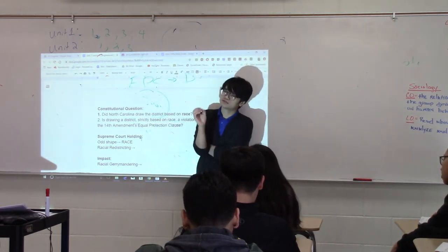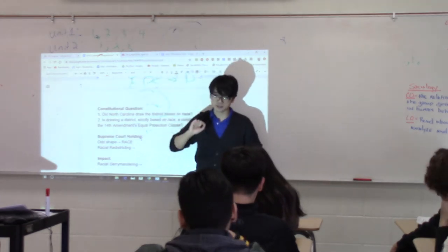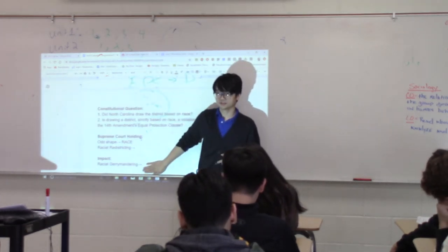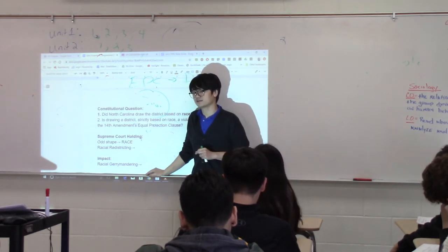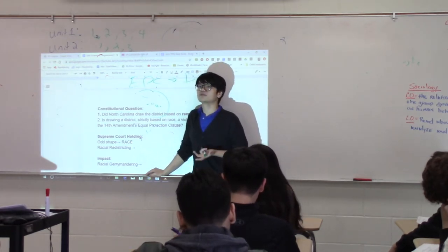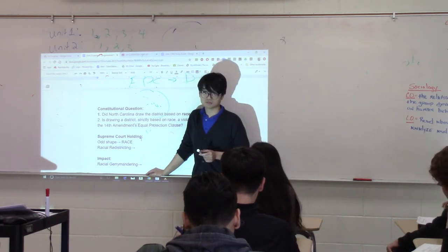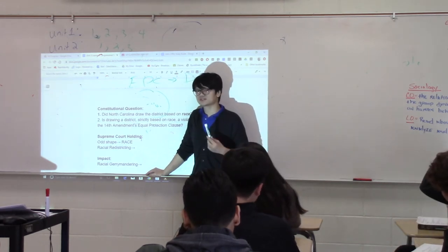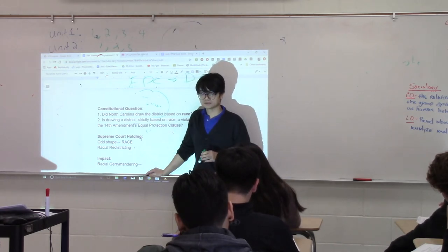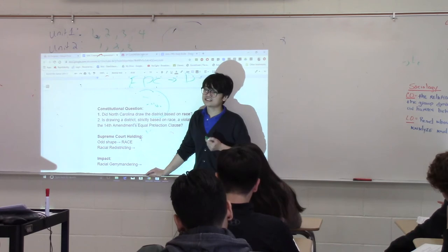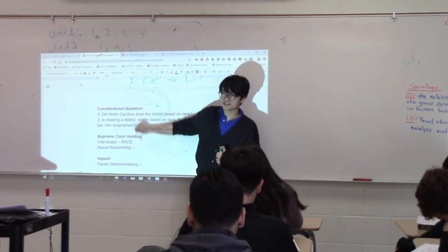Here's what you need to remember. This case made racial gerrymandering — drawing district lines based only on race — unconstitutional. Racial redistricting is unconstitutional. A state cannot draw a district based entirely on race. But the key word is 'entirely.' Race can still be a factor, but it cannot be the only factor. So a state can still use race as a factor, but it cannot be the only factor when drawing these lines, because that would be equivalent to discrimination or segregation — against the 14th Amendment's Equal Protection Clause.